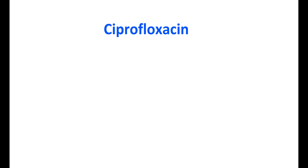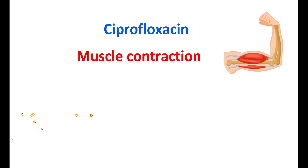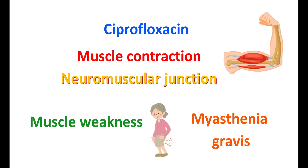Ciprofloxacin can affect both bones and muscles. It can affect muscle contraction, especially at the neuromuscular junction. Because of reduced muscle contraction, this medication can produce muscle weakness and muscle paralysis. However, this action is more important in people with muscle disorders like myasthenia gravis, and in such people use of ciprofloxacin should be avoided.